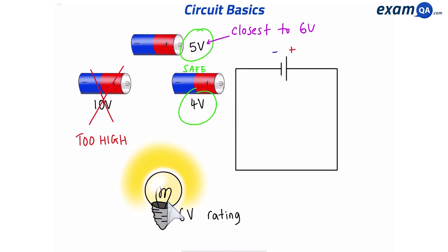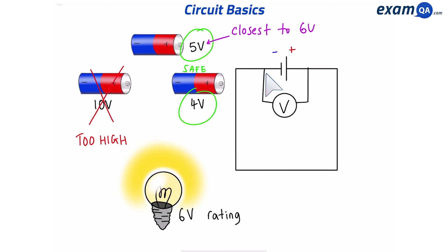If you don't know the voltage of a battery, connect a voltmeter to it. You can connect a voltmeter to anything in the circuit, but make sure it goes around both sides of the thing you're measuring. Here the voltmeter is around both sides of the battery — as a rule, the voltmeter must be around both sides of the component you're measuring.